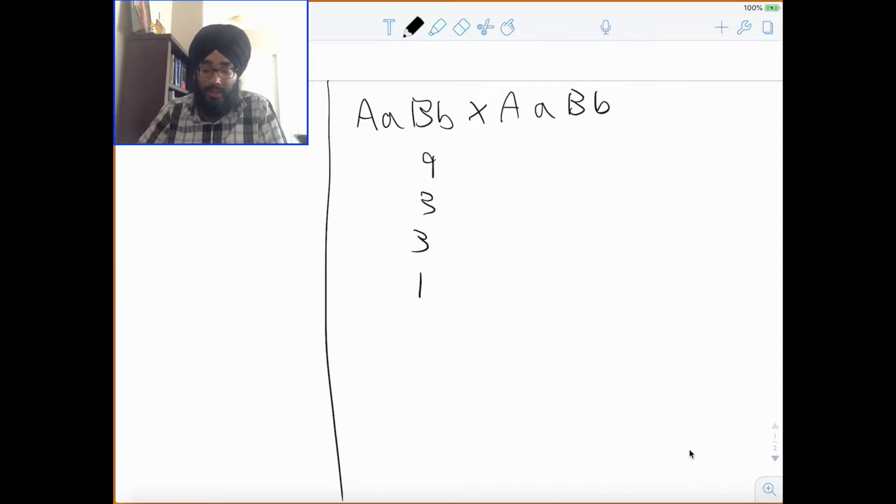If you guys don't believe me, you can feel free to do a Punnett square. But in this genotype, I would get this ratio. This is something you guys will have to memorize. Now, from this comes epistasis.